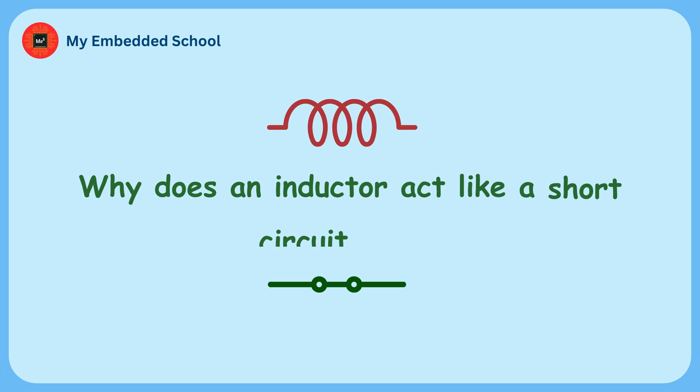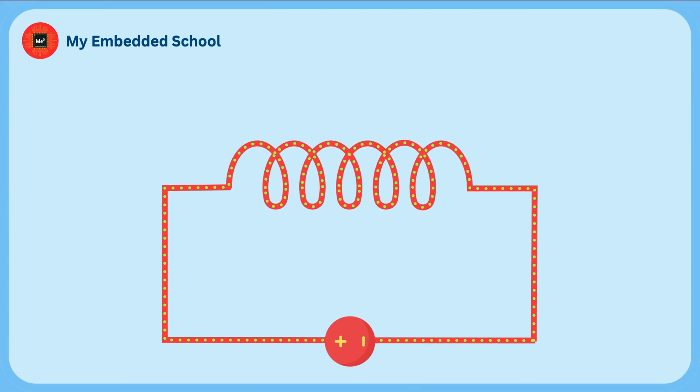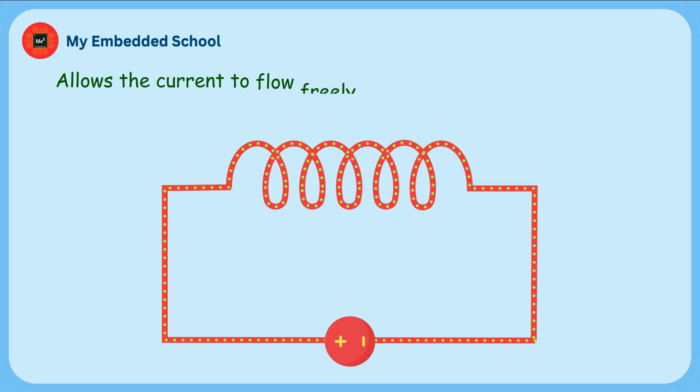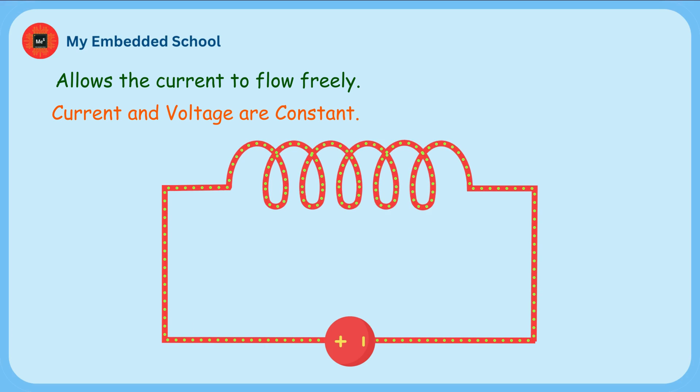Why does an inductor act like a short circuit to DC? In steady state DC, when current is flowing through the inductor, it allows the current to flow freely. This is because the inductor has a steady state where the current and voltage are constant, so there is no opposition to the current flowing through the inductor.